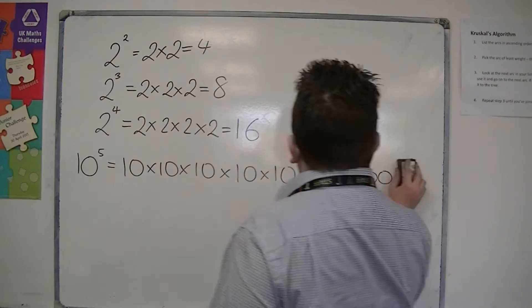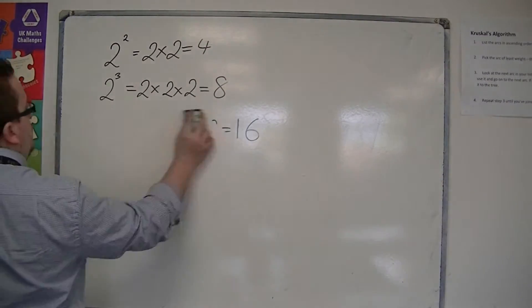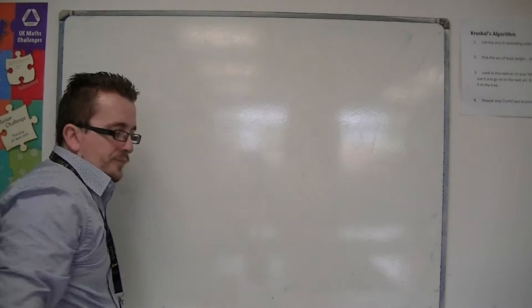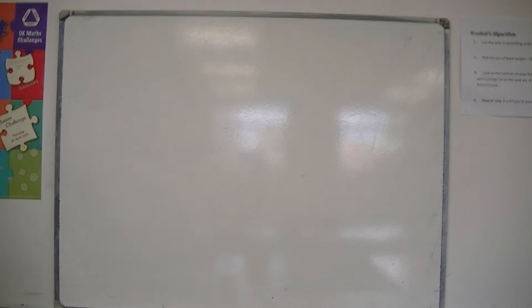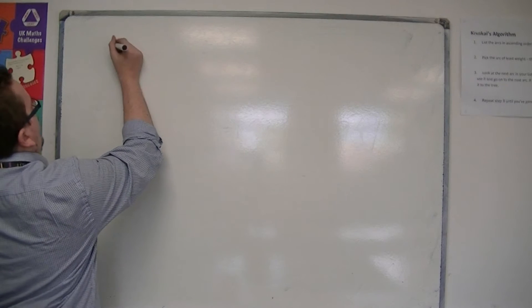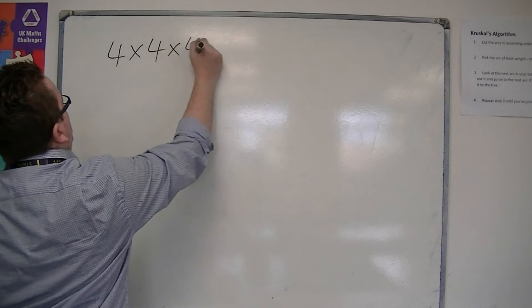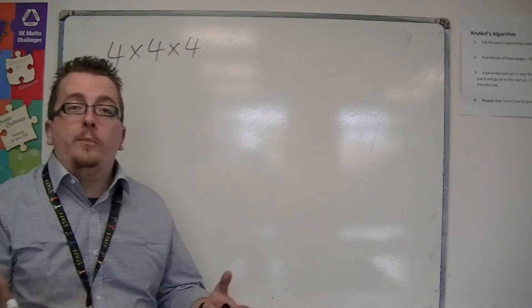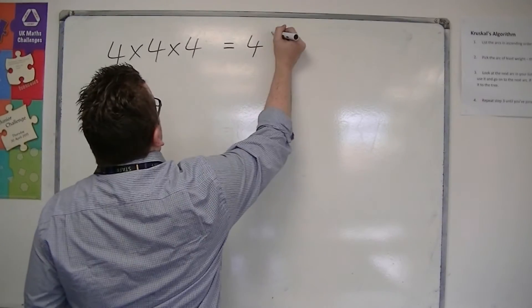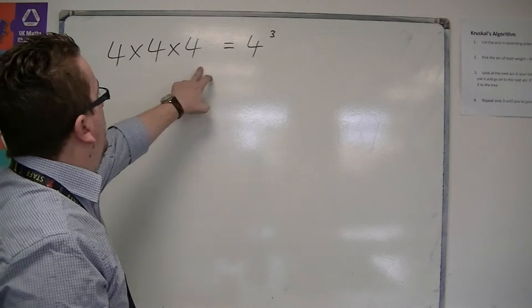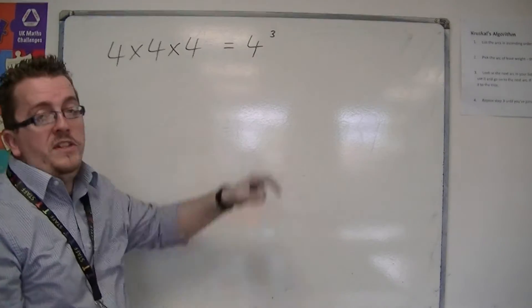What you can then do is work backwards a little. So you can say things like: write this down in index notation, or as a power of 4. Then this would be 4 cubed — 4 has been multiplied by itself 3 times.